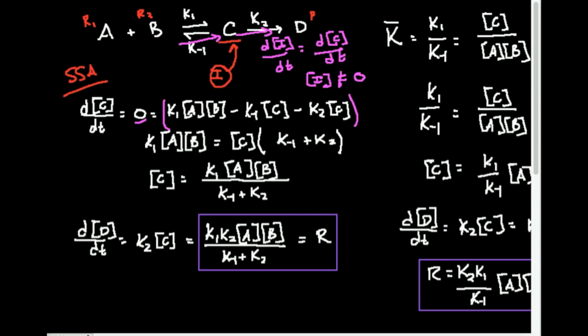We first want to look at what forms C. The forward reaction gives K1 times [A] times [B]. Then we have two reactions that take away from C: the reverse reaction gives minus K-minus-1 times [C], and the forward step to product gives minus K2 times [C]. If it's unclear where this expression comes from, there is another video explaining that in more detail. But I'm going to assume you know where it comes from, and now we're going to manipulate this to determine the rate law.